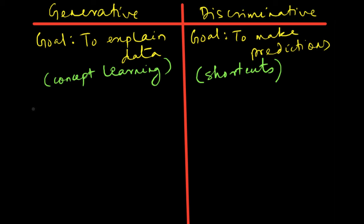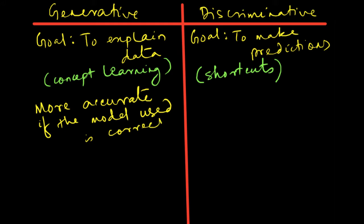So generative model because of this reason is more accurate because it has learned something about the underlying data but this is only if the model used is a correct one. Because if you use wrong models you may learn all kinds of wrong things and then generative models can become really problematic. But discriminative models are more robust to outliers and to bad models.